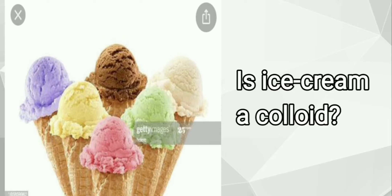Emulsion means a mixing of two substances that generally don't mix with each other but will disperse in one another. In the preparation of ice cream, milk fats are mixed with water and form a complex substance. That's why it is an example of a colloid — specifically an emulsion. It contains different solid, liquid, and gas components as explained.